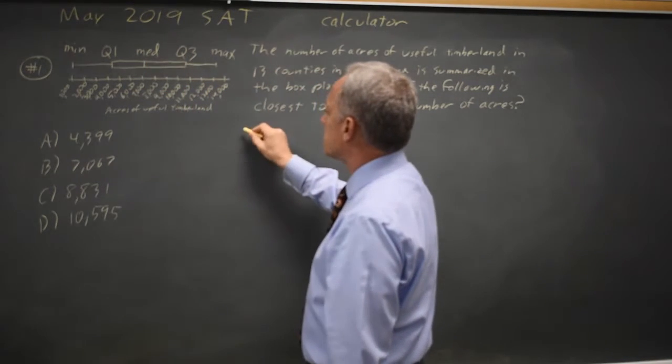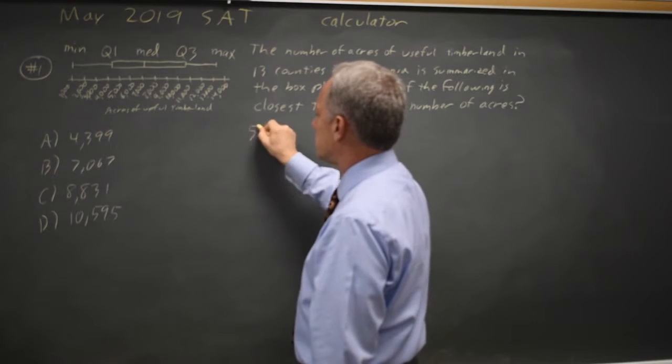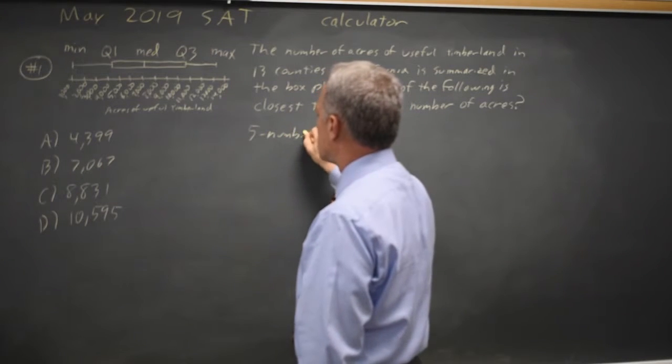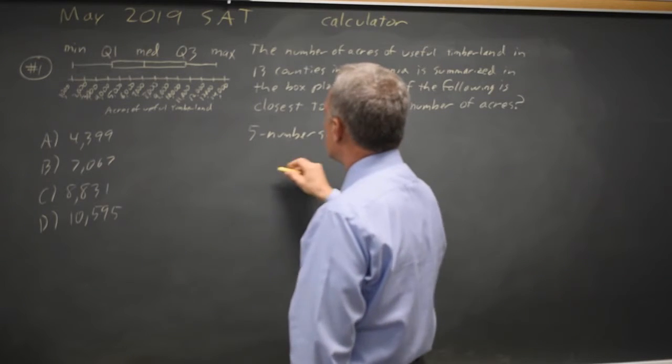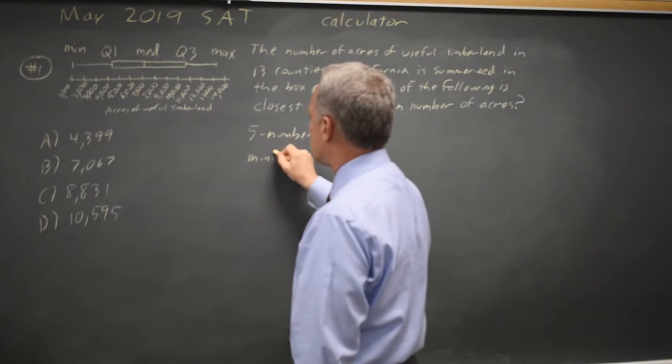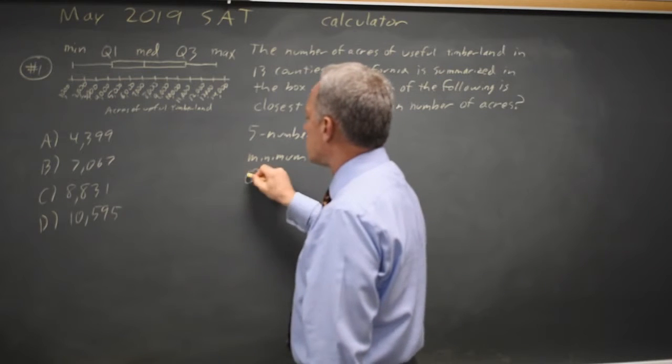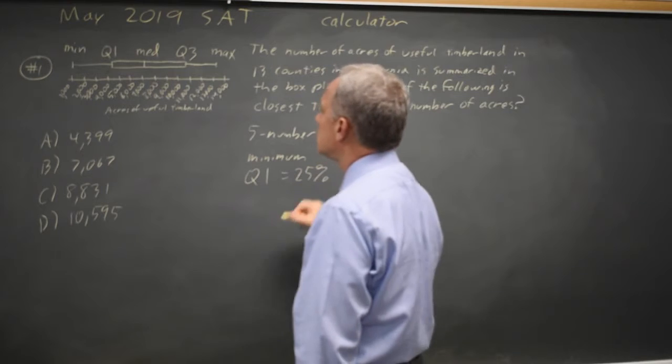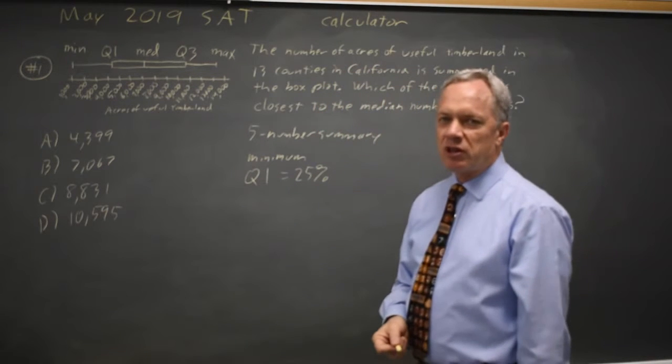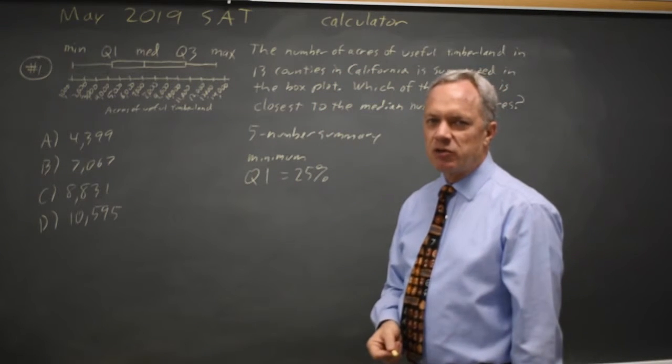So our five numbers, this is sometimes called the five number summary. Quartile one, which is the 25th percentile, meaning one fourth of your observations are less and three fourths are more.